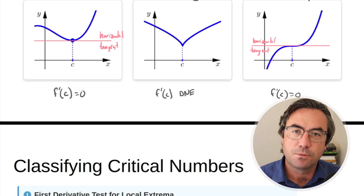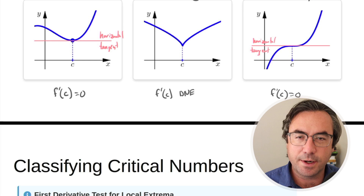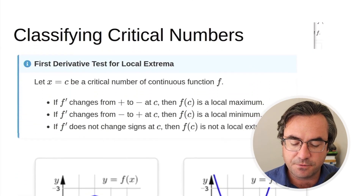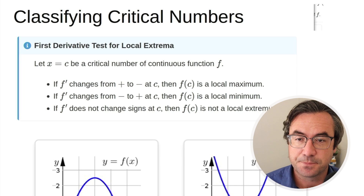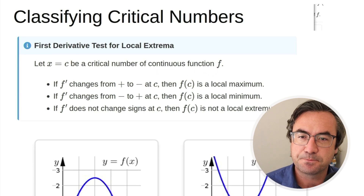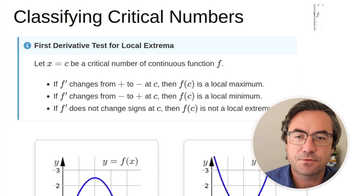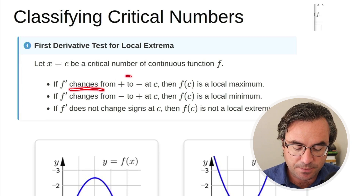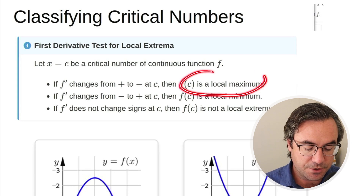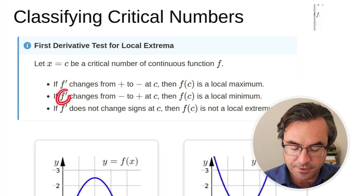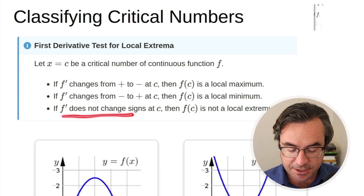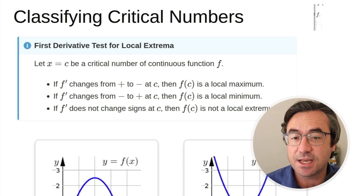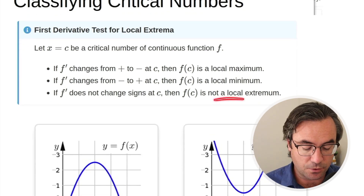We find the critical numbers — that narrows it down quite a bit — but then we have to go further and confirm whether we have a max or a min at those points, and we can use the first derivative for this. If we know we have a critical number at x equals c and our function is continuous, if we do our sign chart for f' and we see that it changes from positive to negative, then our function has a local max. If our derivative changes from negative to positive, then our function has a local min. And if there's no sign change — f' does not change signs — then it's neither; it's not a local extremum.